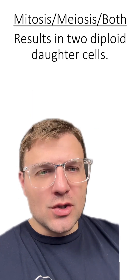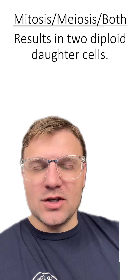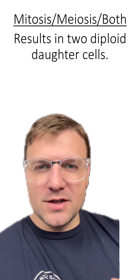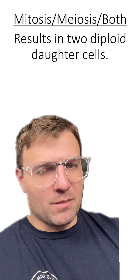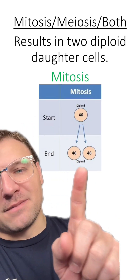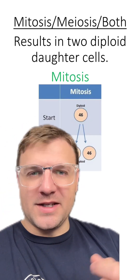Results in two diploid daughter cells. Is this mitosis, meiosis, or both? This is mitosis. At the end, both of these cells will be diploid.